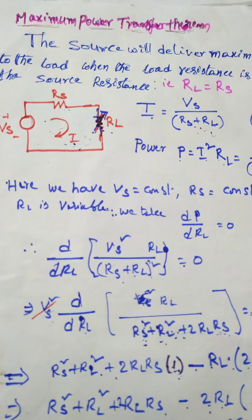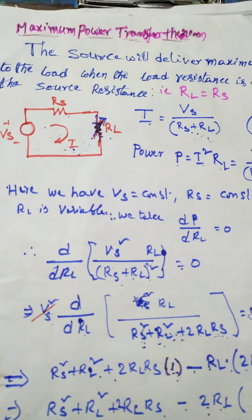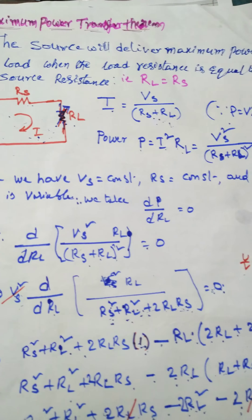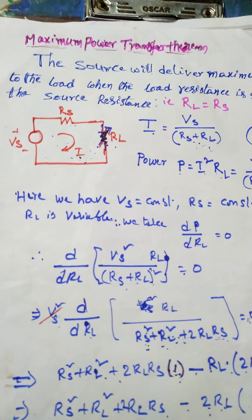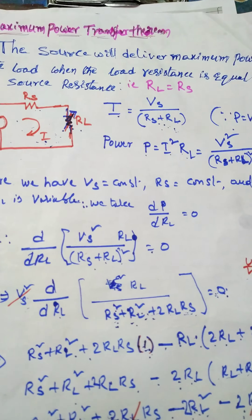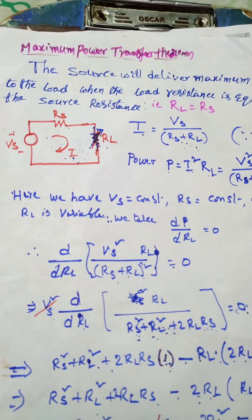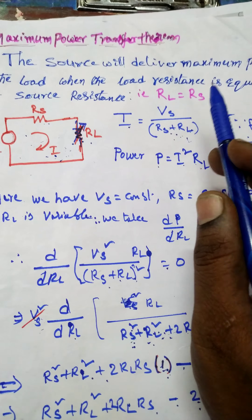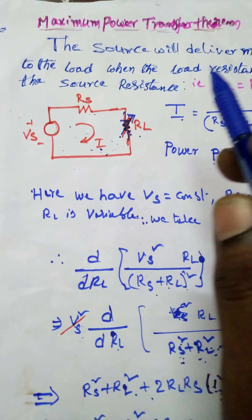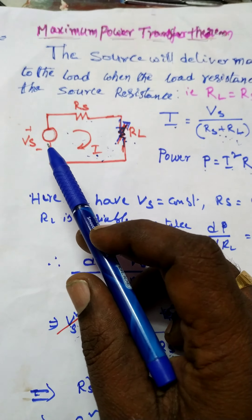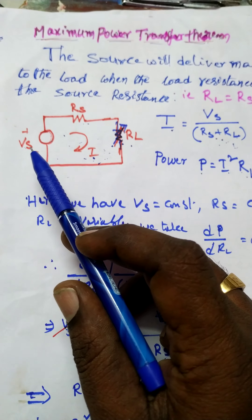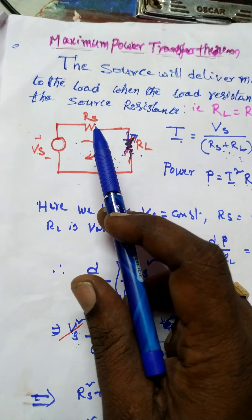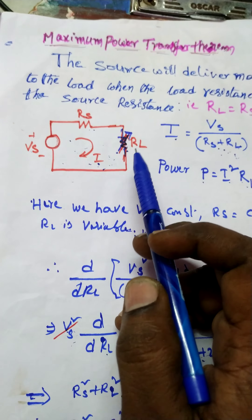Dear students, today we will discuss the maximum power transfer theorem. The statement: the source will deliver maximum power to the load when the load resistance is equal to the source resistance, that is RL equals RS. Now take a simple circuit with voltage source VS, source resistance RS, and a load resistance RL.